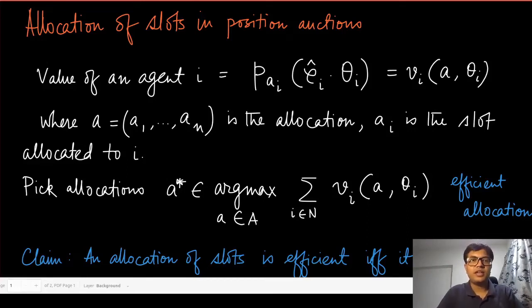Let us now look at how slots are allocated in position auctions and how they are priced. As we discussed before, the value of an agent i is a product of three components. The first component is its value - how much it values that particular click, independent of which position that click came from. Once the user is in the website of the advertiser, that is the value it gets.